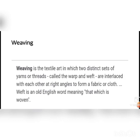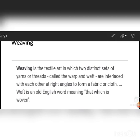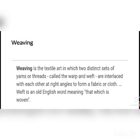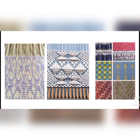Next is weaving. Weaving is the textile art in which two distinct sets of yarn or threads, called the warp and weft, are interlaced with each other at right angles to form a fabric. That is weaving — when we weave a cloth. You can see here the weaving, textile art.